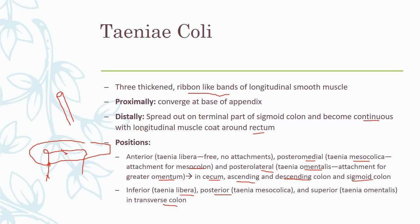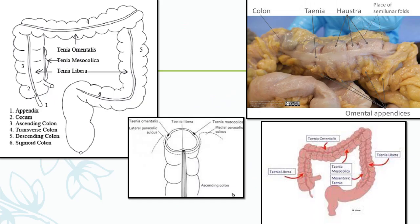The anterior teniae now becomes the inferior teniae libera, and the posterior medial teniae now becomes the posterior teniae mesocolica. Looking at the diagram, we can see the appendix, the ileum coming into the cecum, the cecum, the ascending colon, transverse colon, descending colon, sigmoid colon, and rectum. We have an anterior teniae libera — the free teniae not attached to any structure — then the posterior medial teniae mesocolica, and finally the teniae omentalis present on the posterior lateral aspect of the ascending, descending, sigmoid colon, and cecum.